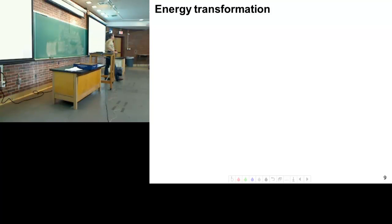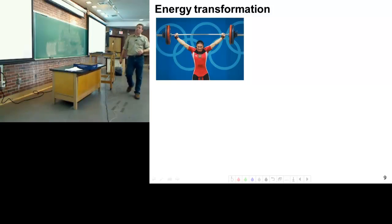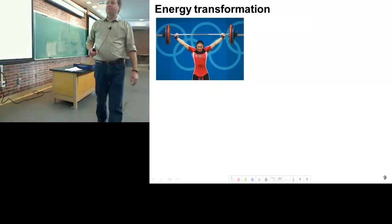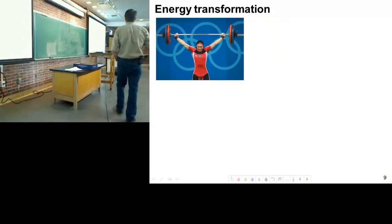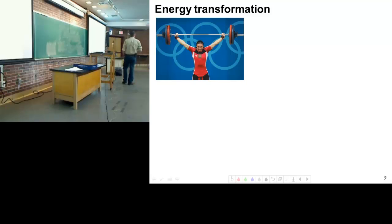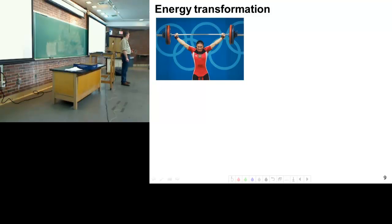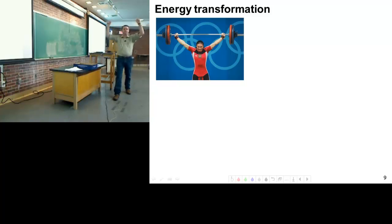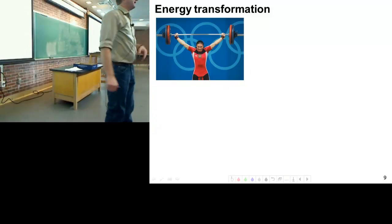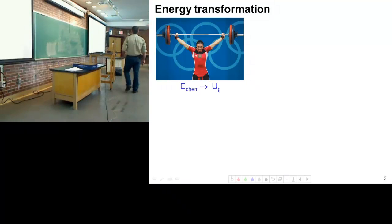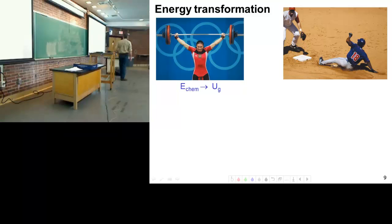We need to know what the energy transformation is to solve problems. For a person lifting barbells, what's the initial form of energy? Chemical energy from herself. She lifts the barbell up — what's the final energy? Potential energy. So the transformation is chemical to potential energy.